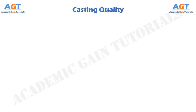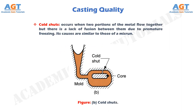Cold shots occur when two portions of the metal flow together but there is a lack of fusion between them due to premature freezing. Its causes are similar to those of a misrun.